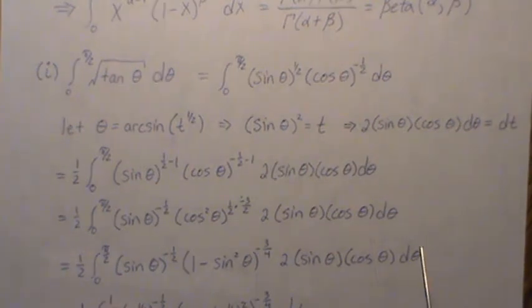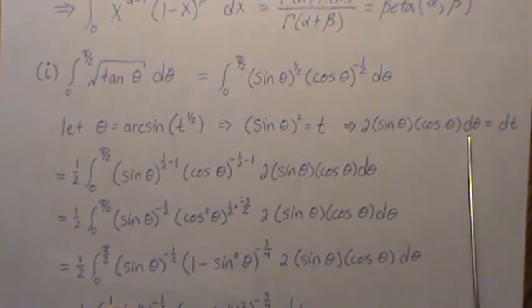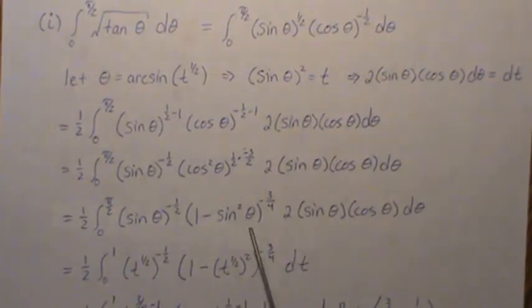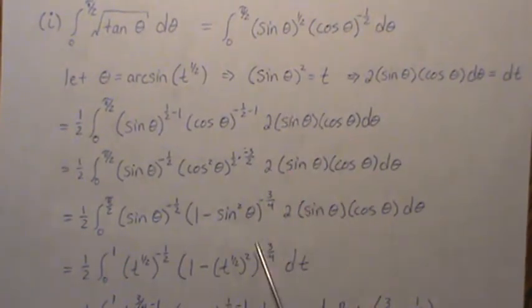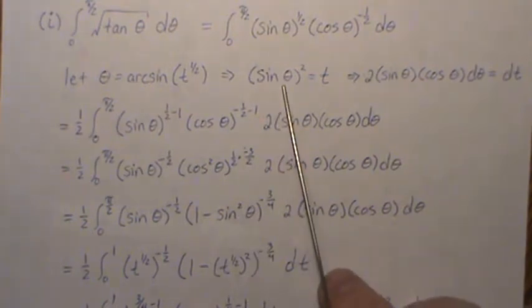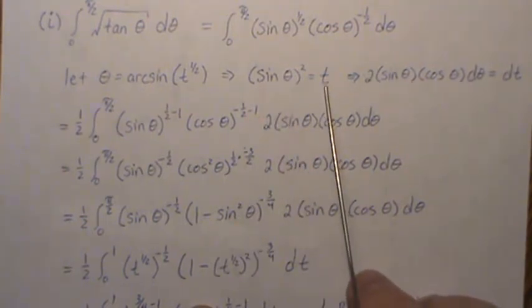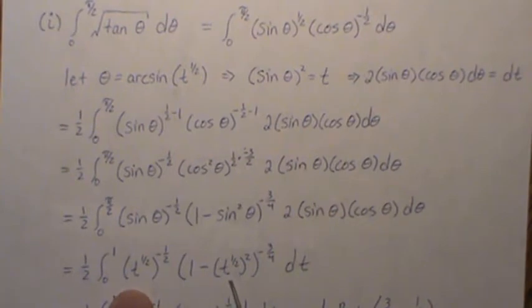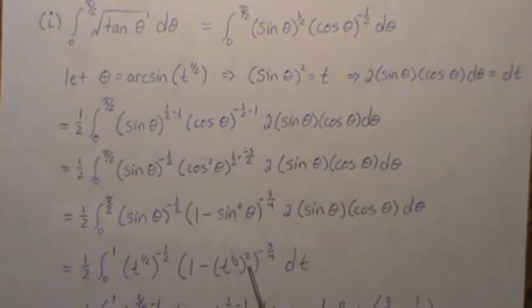Now we substitute in. Here's the differential for t, so we can substitute dt there. For sine we can substitute in t to the 1/2, that's what we get here, otherwise everything is the same. Don't forget the squared there.